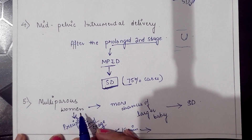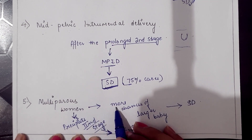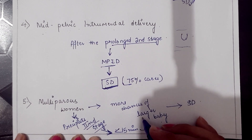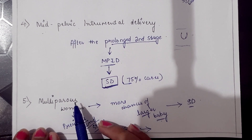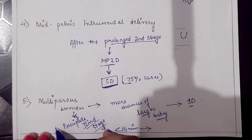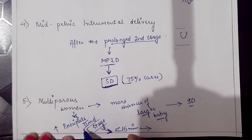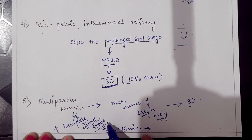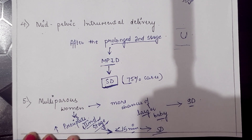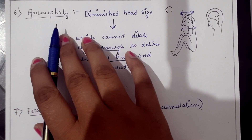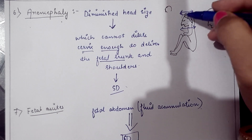In multiparous women — those who have been pregnant more than once — there are greater chances of larger babies, which may cause shoulder dystocia. Additionally, multiparous women have greater chances of precipitate labor during the second stage, where delivery takes less than 15 minutes, which may also cause shoulder dystocia.